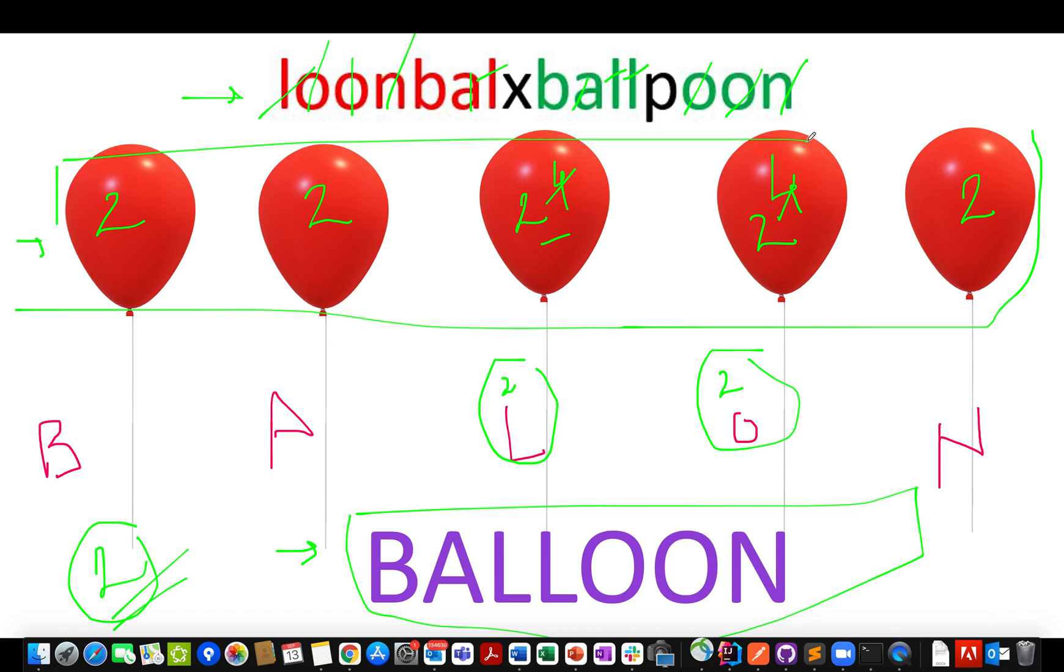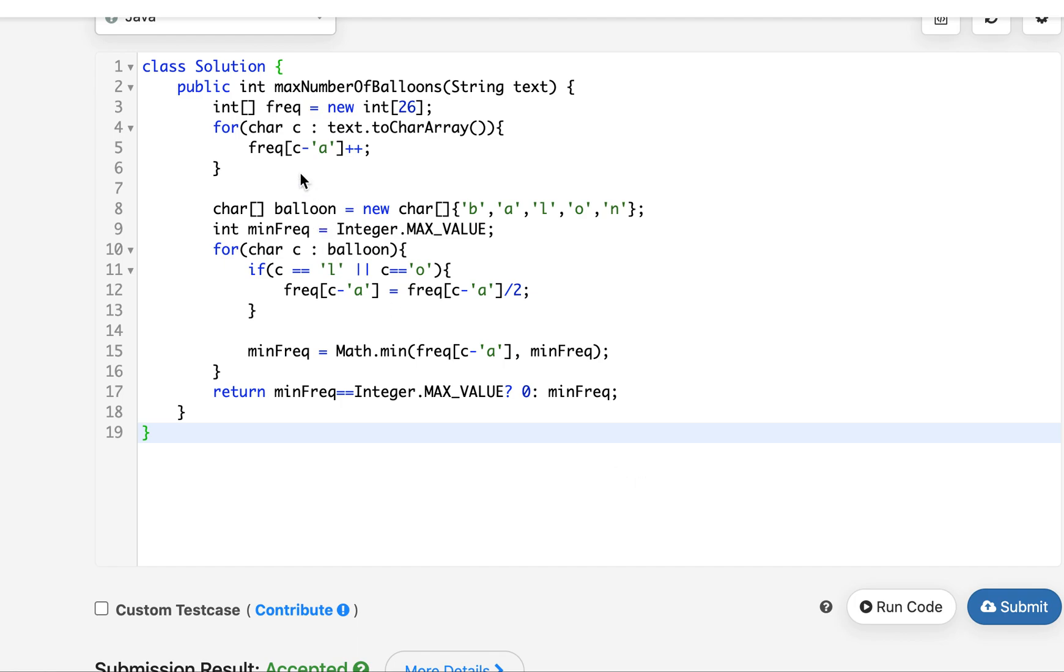So the answer for this case is 2 and you just need to find out the minimum one. I hope you got the context. Without much ado, let's look at the coding section. Firstly I create a frequency array of size 26. I iterate over each character of the input string text and I update the frequency array.